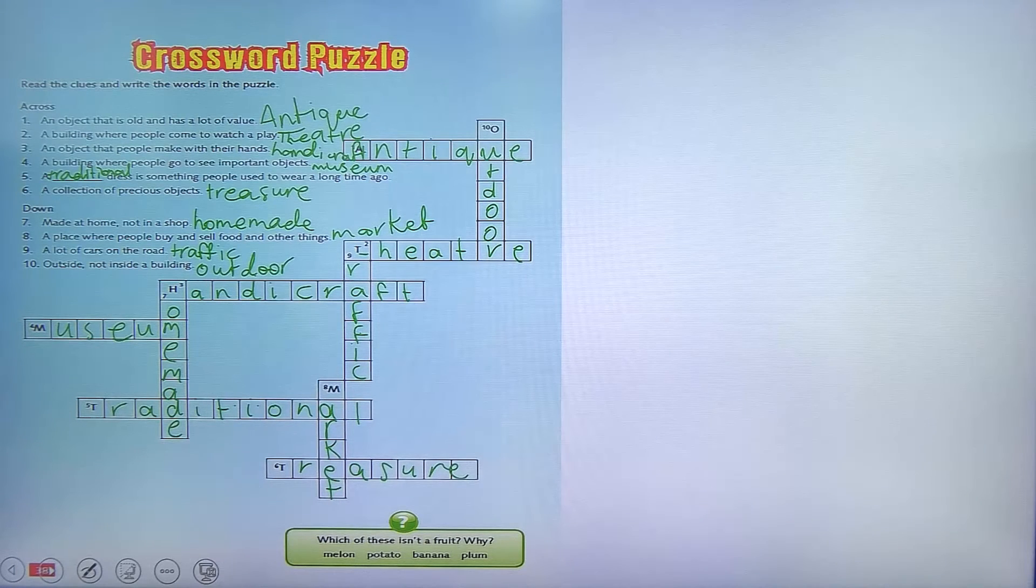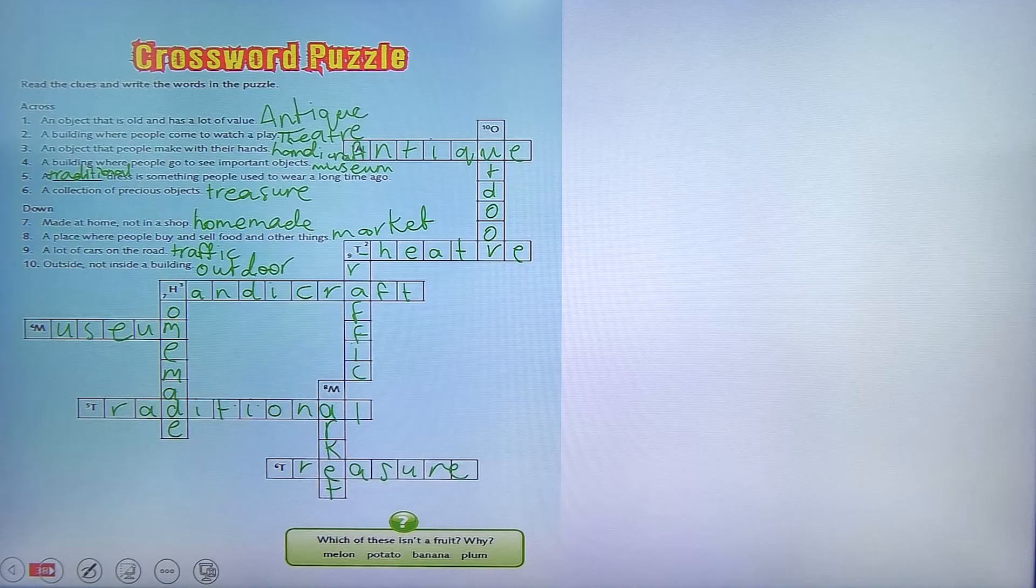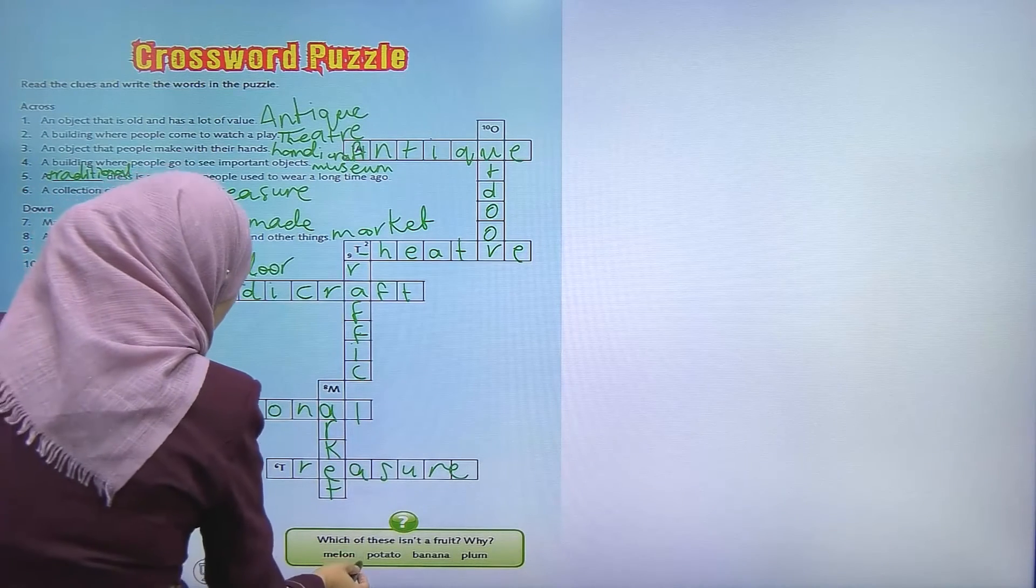Now, which of these isn't a fruit and why? Melon, potato, banana, and plum. Which one isn't a fruit? Because it's a potato.